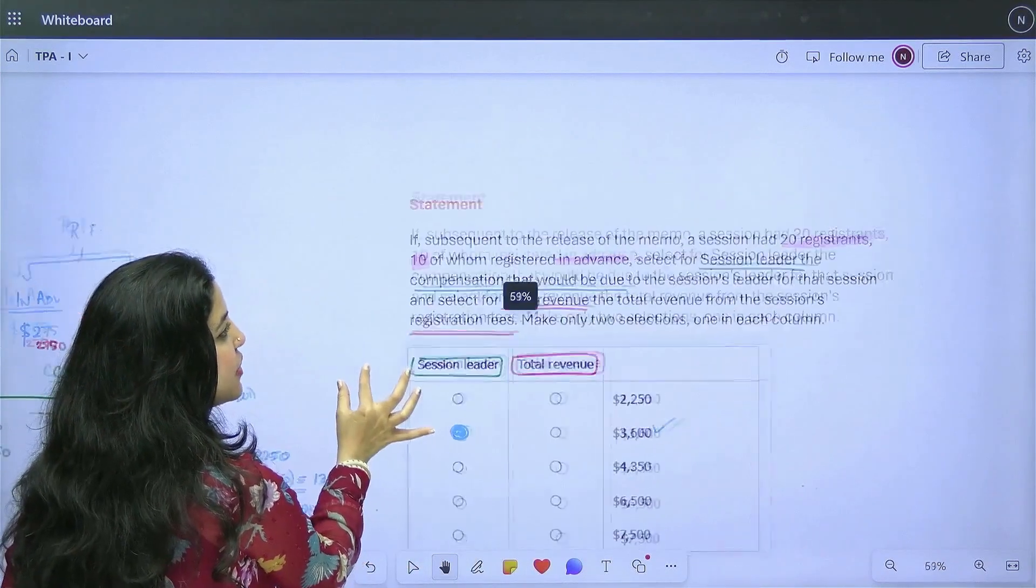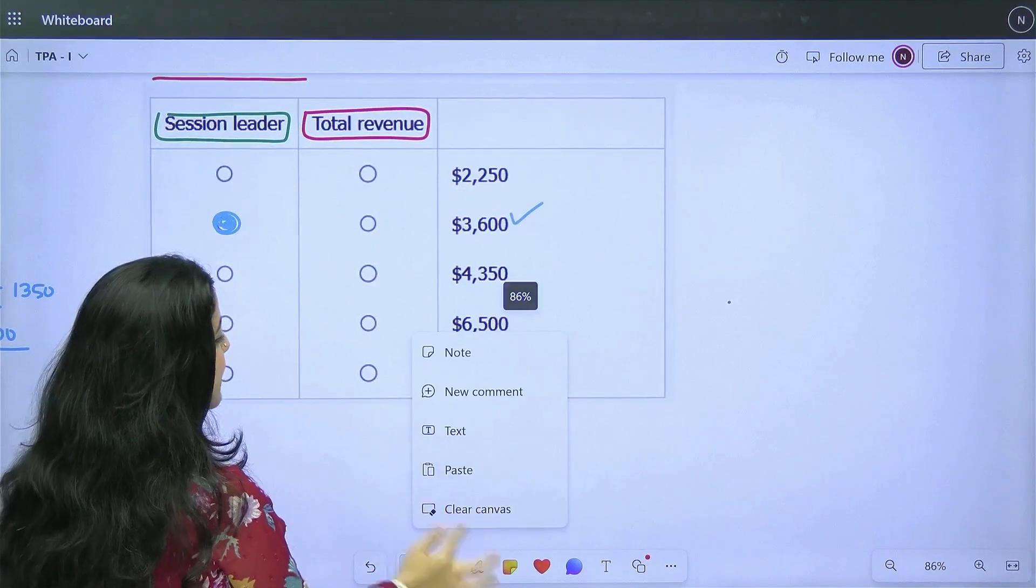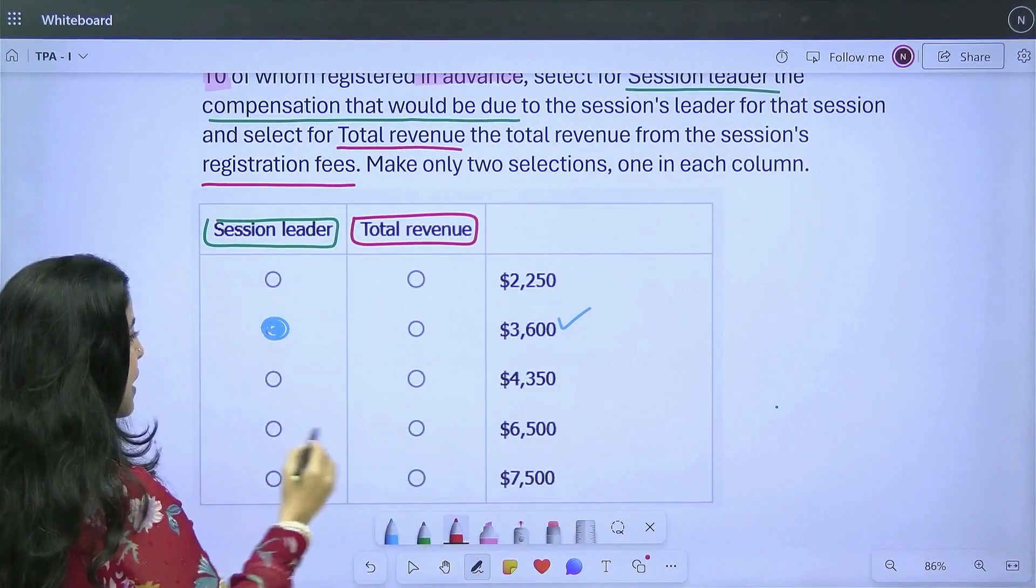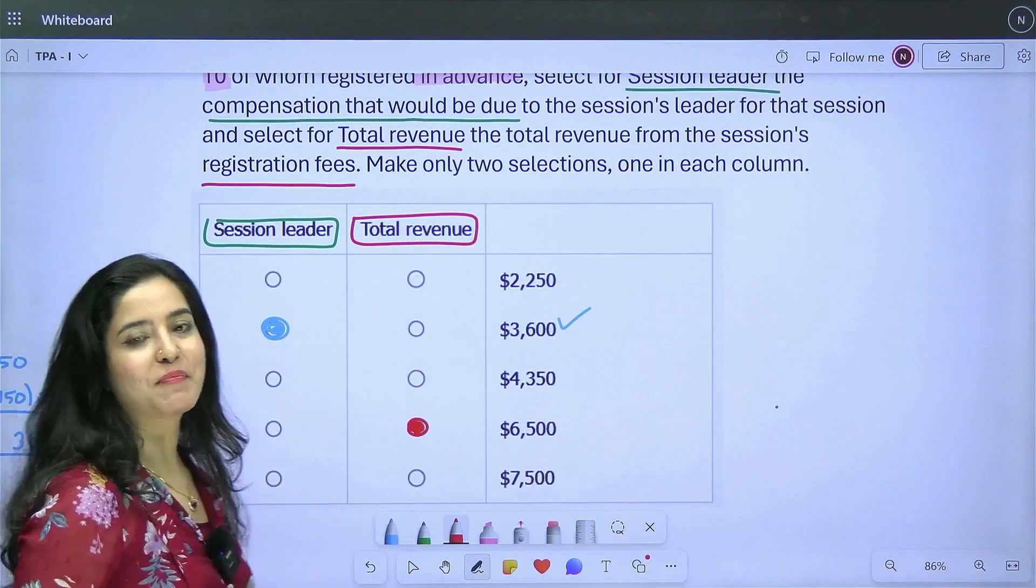Let's just see where that is here in our choices. It's the fourth one here. 6500. Let's just mark this. So, I'm marking the fourth row here for my second column and I'm done.